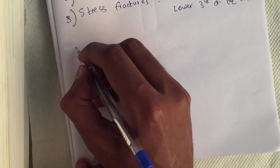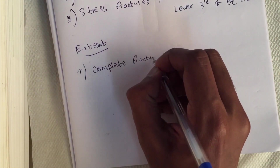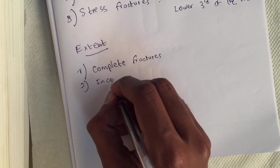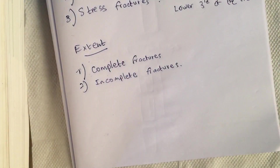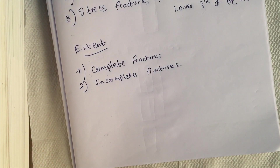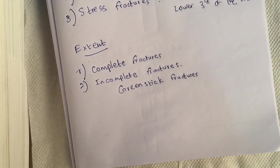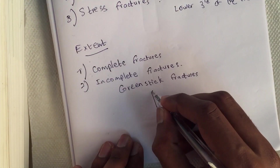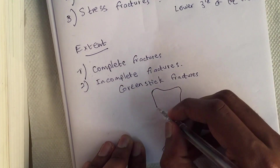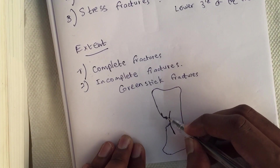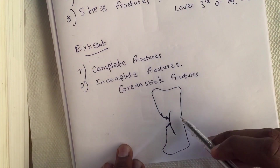Fractures are further classified based on extent. Complete fractures occur when the fracture line involves both cortices of the bone. Incomplete fractures occur when the fracture line does not reach the other cortex. There are two types of incomplete fractures. The first type is greenstick fracture, which occurs in children because their bones are soft. It is not a complete fracture.